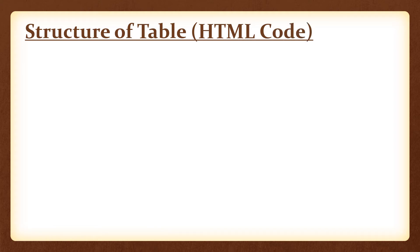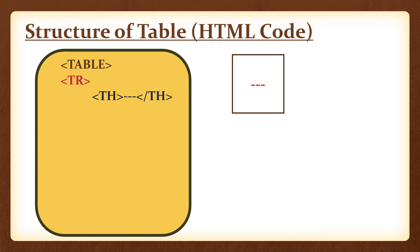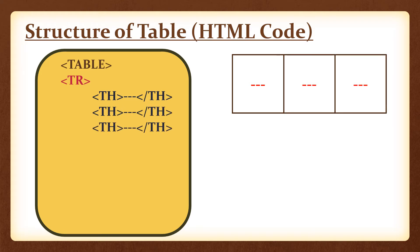Next is the structure of the table — that means what will be the sequence of HTML code using these tags to create a table. First, you write the table tag to begin the table. Then you define the first row with the tr tag. After that, give the first cell value using the th tag. Cell values can be defined with both th and td tags, but th defines the value as bold, so it can be used as a column heading. Define as many columns as you have using the th tag, then close the tr tag — that means the first row is finished.